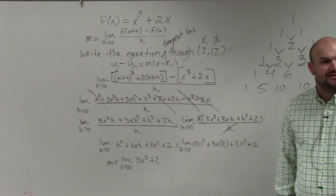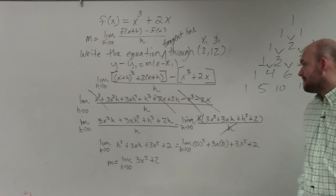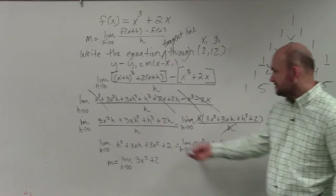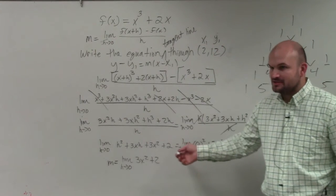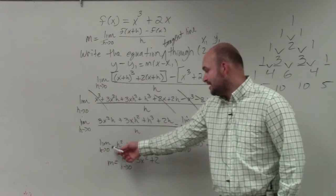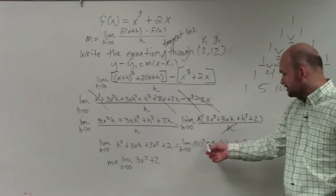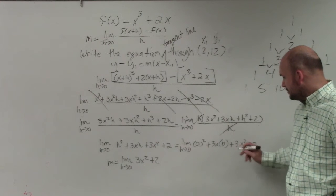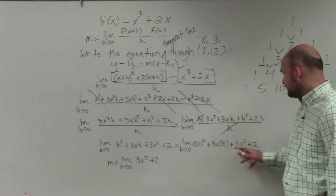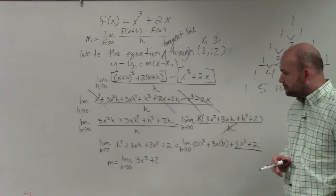And when we go ahead and evaluate this as h goes to 0, I divide out the h's. Now, you guys can see I don't have a denominator. Then now I can apply direct substitution. So I plug the zeros in for the h. And you can see the only thing left over I'm going to have is 3x squared plus 2.